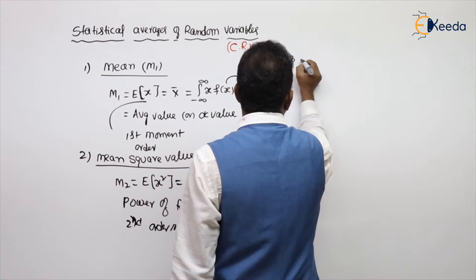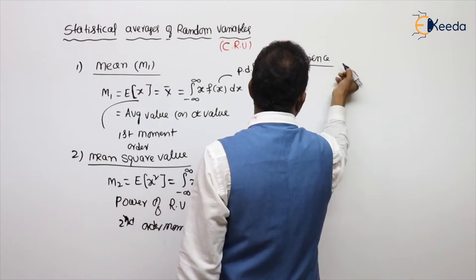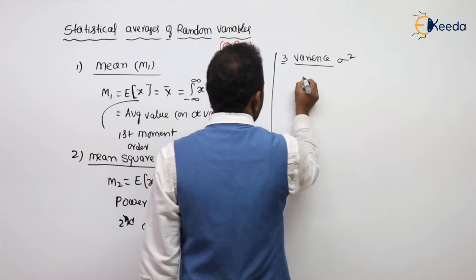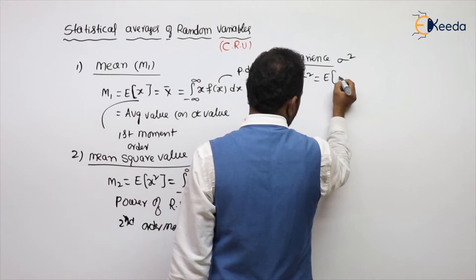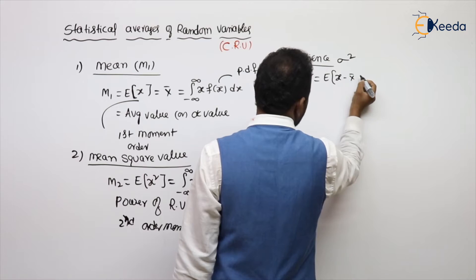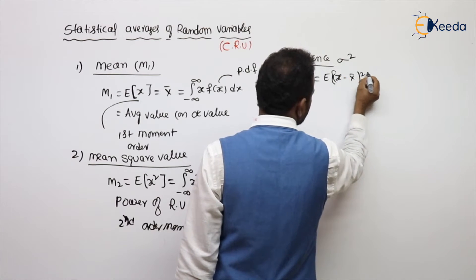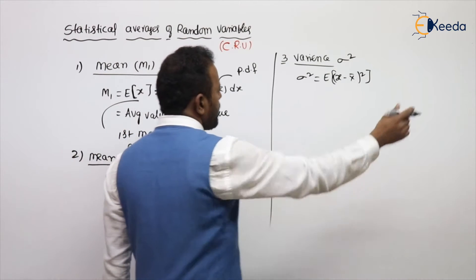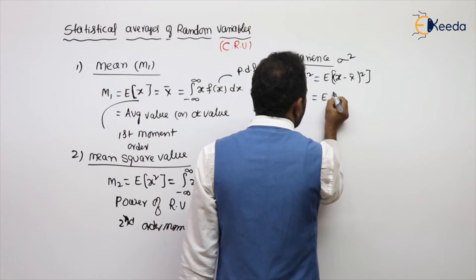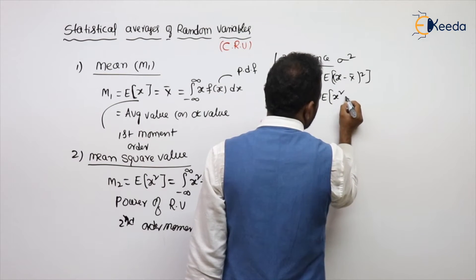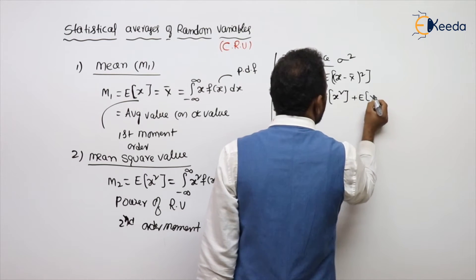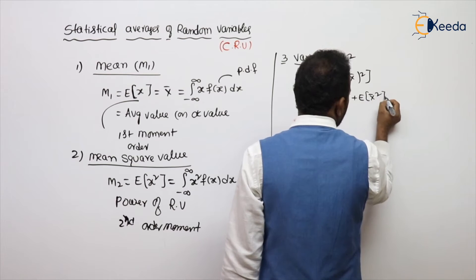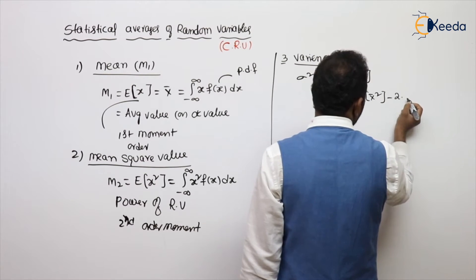The third parameter is variance. Variance is denoted with sigma squared. Variance is nothing but the expected value of (x minus x-bar) whole squared. Expanding this, E of (a minus b) squared gives a squared minus b squared minus 2ab, so we get E of x squared minus x-bar squared minus 2 times x times x-bar.